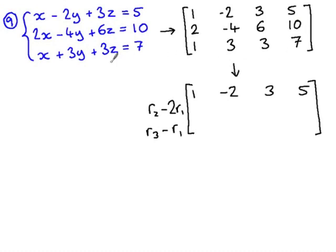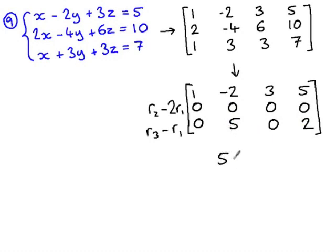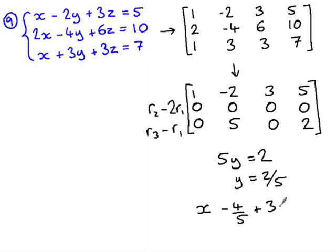With the matrix form of example number nine, I'm going to replace row two with row two take two lots of row one, and row three with row three take row one. Again, this has resulted in a row of zeros. The third row has reduced to five y equals two, so we know that y is two-fifths. From the first row, x take two y plus three z equals five, which I can simplify to five x plus fifteen z equals twenty-nine. Let's have a look at that row of zeros.